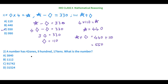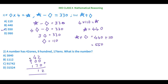42 ones means 42 times 1, which is 42. 9 hundreds means 9 times 100, which is 900. 17 tens means 17 times 10, which is 170. Now we add all these: 42 plus 900 plus 170. 4 plus 7 is 11, carry 1, then 11 again — we get 1112. So our final answer is 1112.